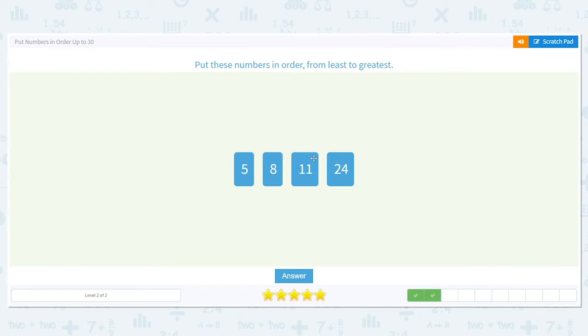So we have 11 and 24. So let's think of age. Will you turn 11 first? Or will you turn 24 first? You're going to turn 11 first. So we're good to go. 5, 8, 11, 24.